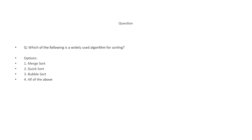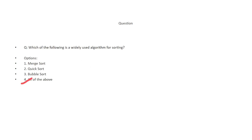Which of the following is a widely used algorithm for sorting? The options are: merge sort, quick sort, bubble sort, and all of the above. The correct answer is all of the above — all of these algorithms are used for sorting.